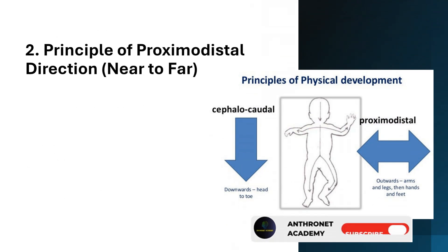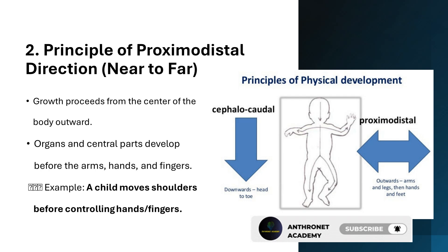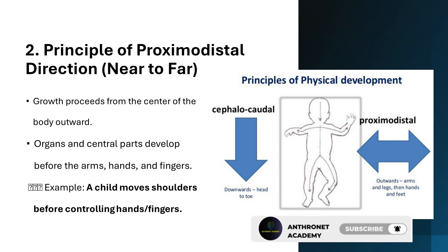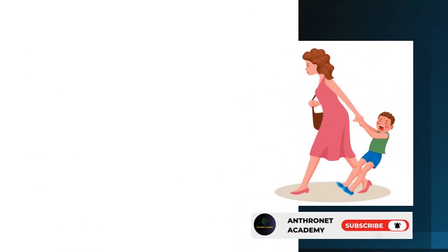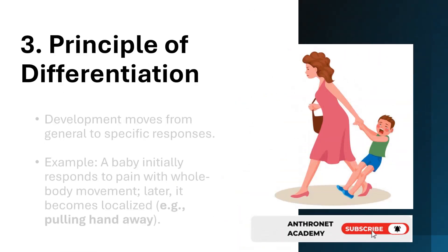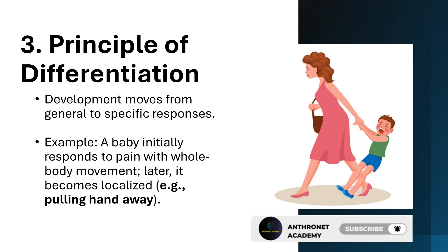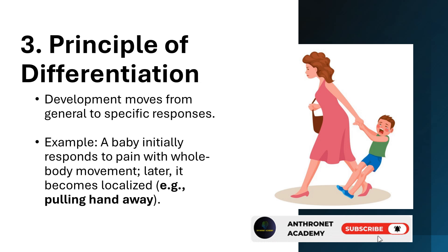Principle 2 — Proximodistal direction (near to far): growth proceeds from the center of the body outward; organs and central parts develop before the arms, hands, and fingers. Example: a child moves shoulders before controlling hands or fingers. Principle 3 — Differentiation: development moves from general to specific responses. Example: a baby initially responds to pain with whole body movement; later it becomes localized, e.g., pulling the hand away.